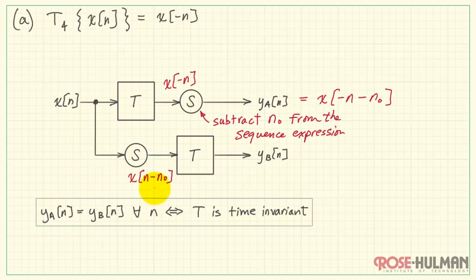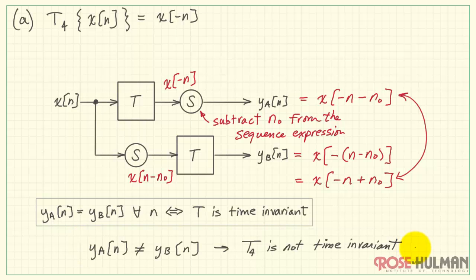Now let's pass X through the pre-shift, giving us X[n - n_0] as the input to system T. Now the system will operate by changing the sign of the sequence expression, so that would be n minus n_0 with a negative sign in front. Let me distribute the negative sign across, and we have X[-n + n_0]. Comparing the two, well, they're not the same due to the difference in sign here. Therefore, y_a is not equal to y_b, and this system T_4 is not time invariant.